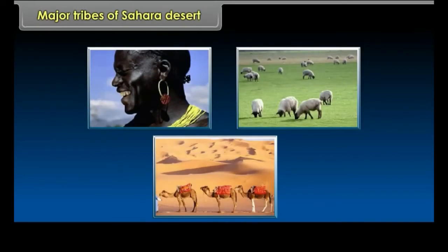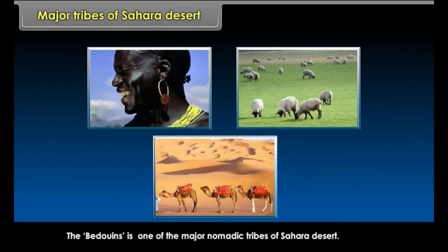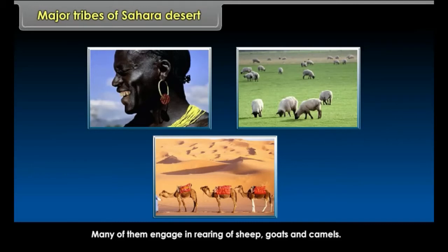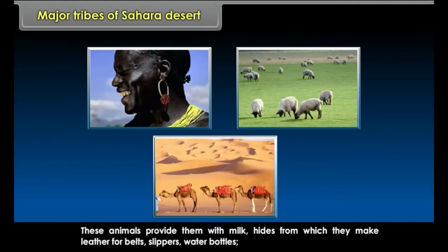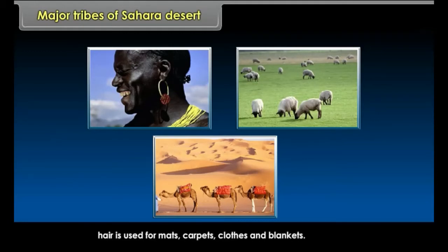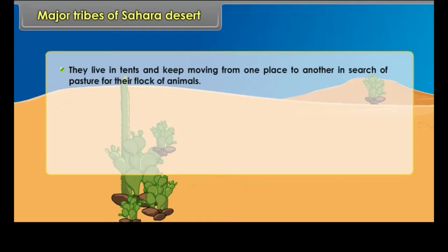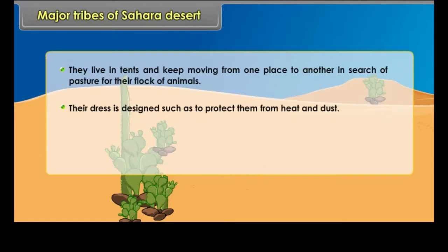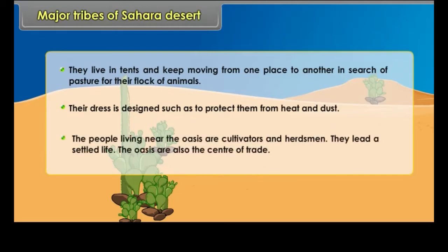Major Tribes of Sahara Desert. The Bedouins are one of the major nomadic tribes of the Sahara Desert. Many of them engage in rearing sheep, goats, and camels. These animals provide them with milk, and hides from which they make leather for belts, slippers, and water bottles. Hair is used for mats, carpets, clothes, and blankets. They live in tents and move from place to place in search of pasture. Their dress is designed to protect them from heat and dust. The people living near the oasis are cultivators and herdsmen who lead a settled life, and the oases are also centers of trade.